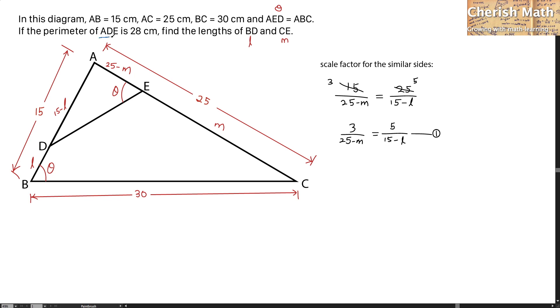Taking triangle ADE with 28 cm perimeter, this is triangle ADE. I have to add up the entire sides here to get 28 cm. This will be 15 minus L plus DE plus 25 minus M equals 28. I'm going to simplify this. That would be L plus M equals DE plus 12.